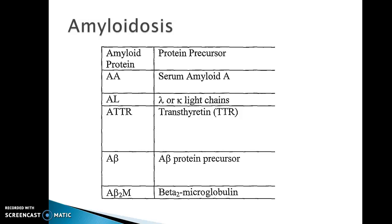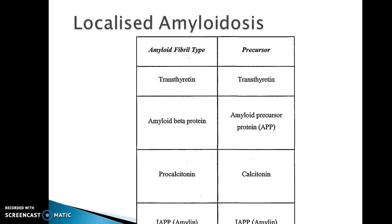Each amyloid protein has a protein precursor. The AA protein is derived from serum amyloid A (SAA); AL is from kappa or lambda light chains; ATTR is derived from transthyretin; A-beta from amyloid beta protein precursor; A-beta-2M from beta-2 microglobulin; transthyretin from transthyretin itself; amyloid beta protein from amyloid precursor protein (APP); procalcitonin from calcitonin; and amylin from amylin itself.